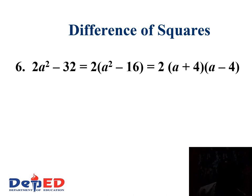Let us have another example: 2a² minus 32. Do we have a GCF? Are both numbers divisible by 2? Yes. So let us factor out 2. We have now a² minus 16. Are a² and 16 perfect squares? Yes. The square root of a² is a and the square root of 16 is 4. So the factors are 2, times (a + 4), times (a − 4).